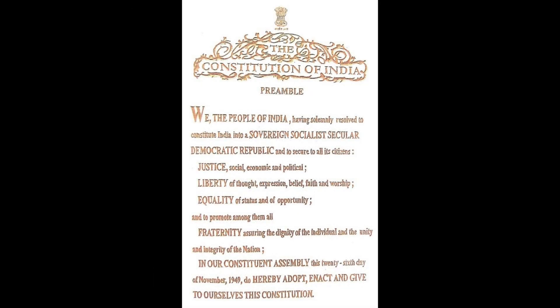The Constitution of India Preamble. We, the people of India, having solemnly resolved to constitute India into a sovereign, socialist, secular, democratic republic and to secure to all its citizens Justice, social, economic and political Liberty of thought, expression, belief, faith and worship. Equality of status and of opportunity. And to promote among them all fraternity, assuring the dignity of the individual and the unity and integrity of the nation. In our Constituent Assembly, this 26th day of November 1949, do hereby adopt, enact and give to ourselves this Constitution.